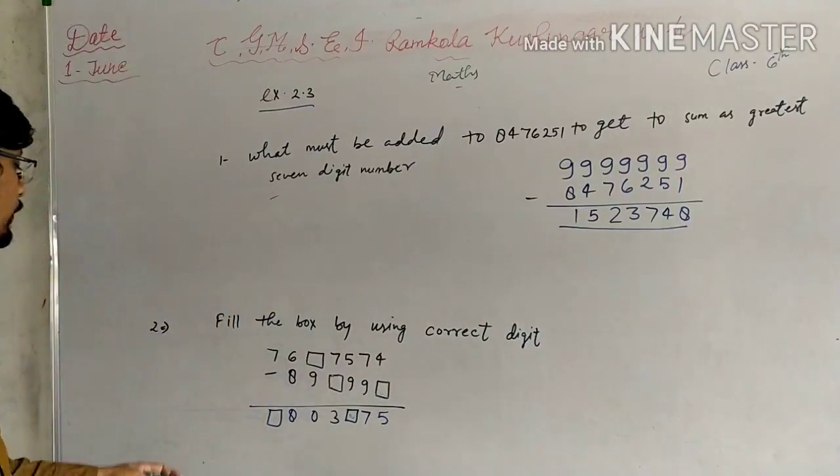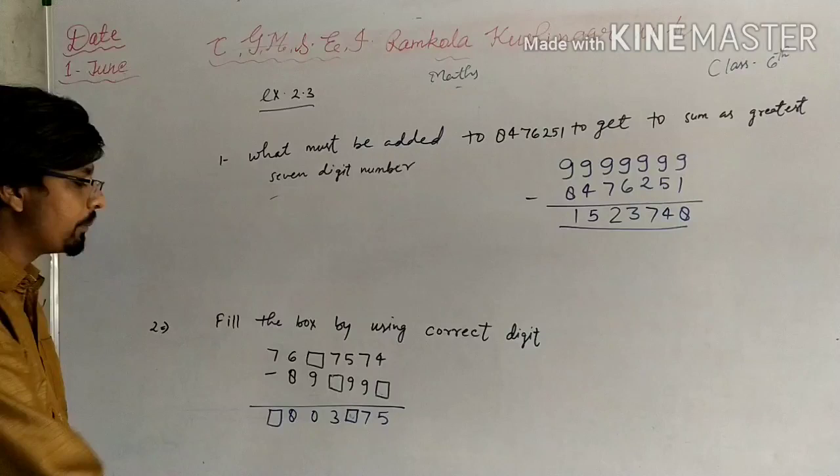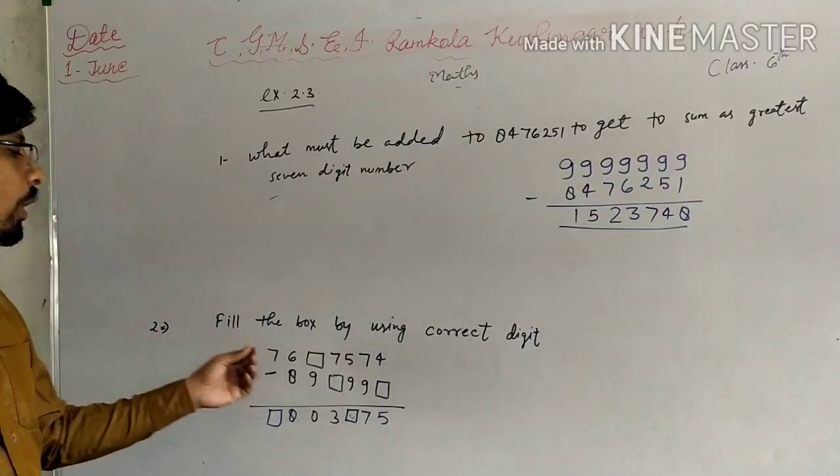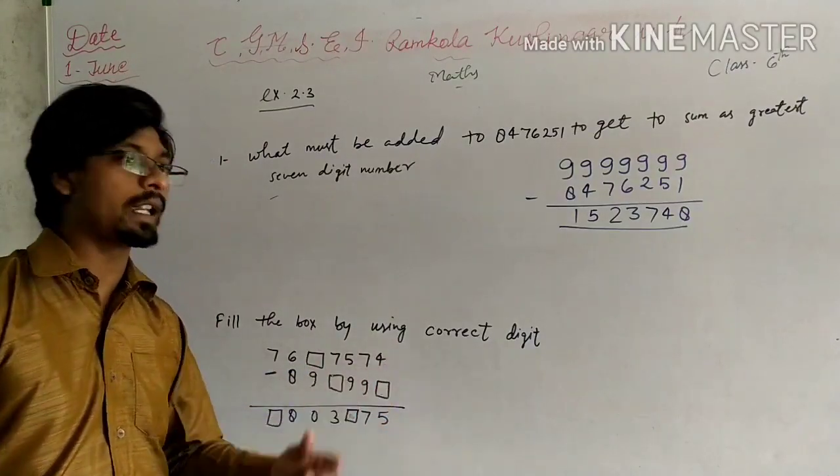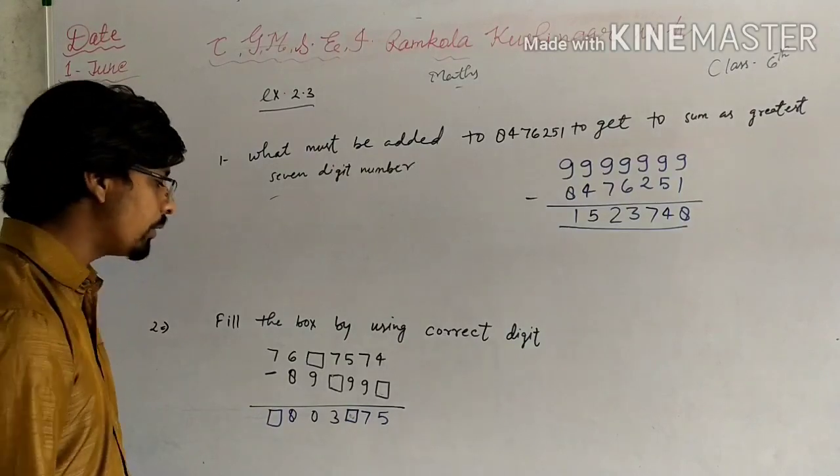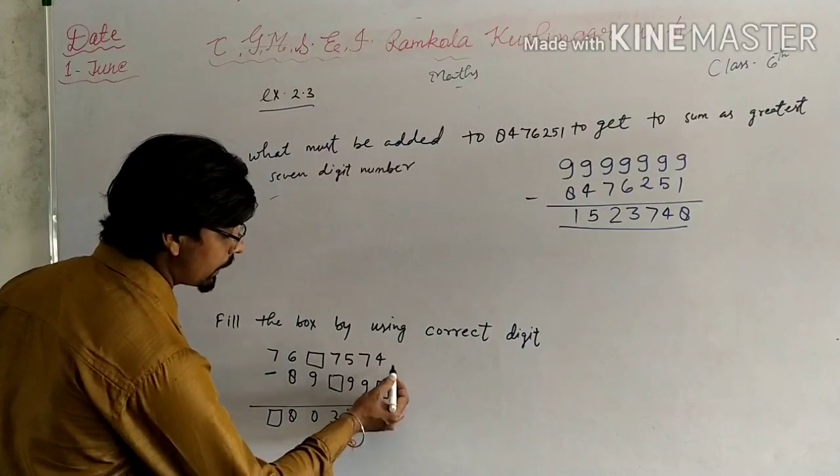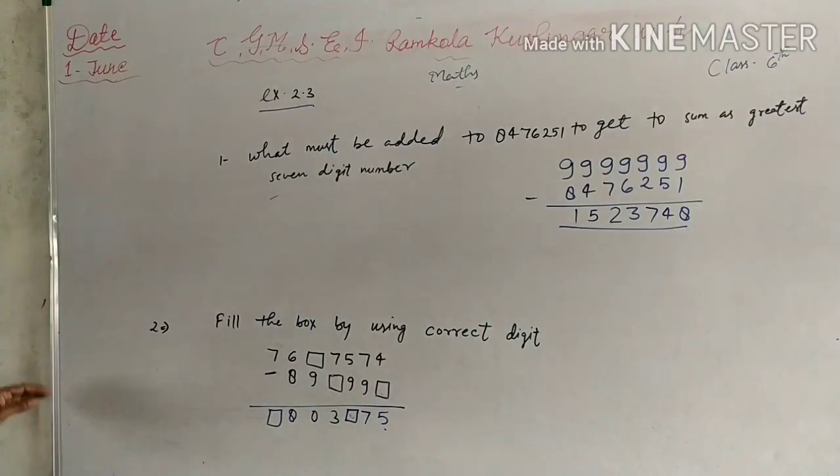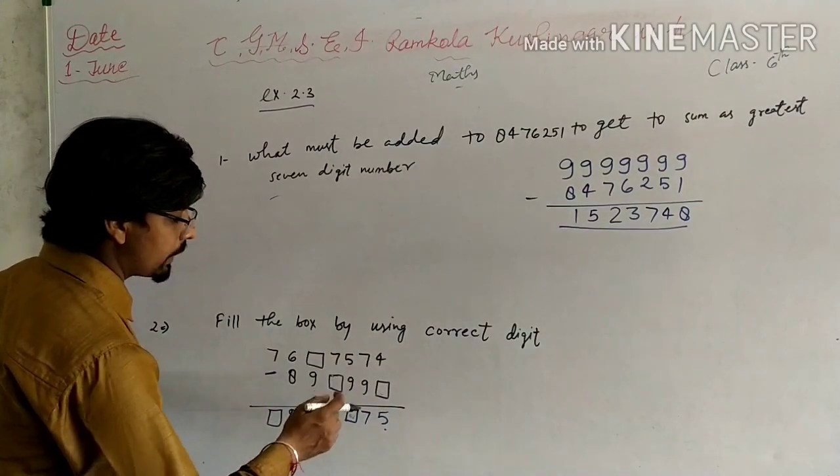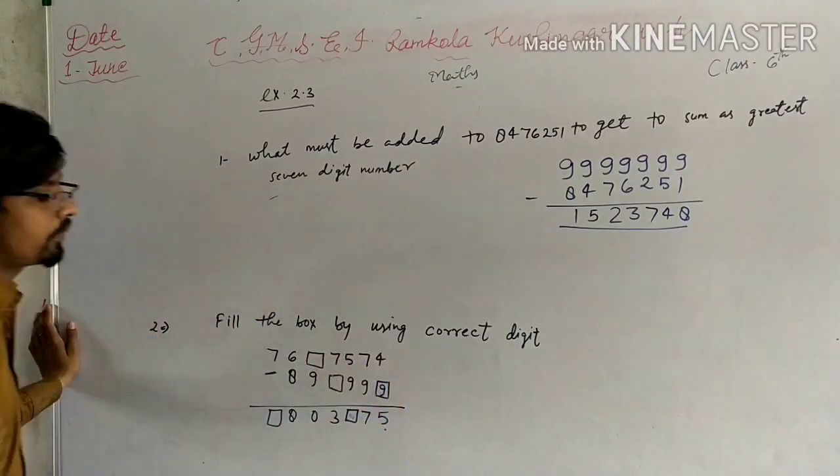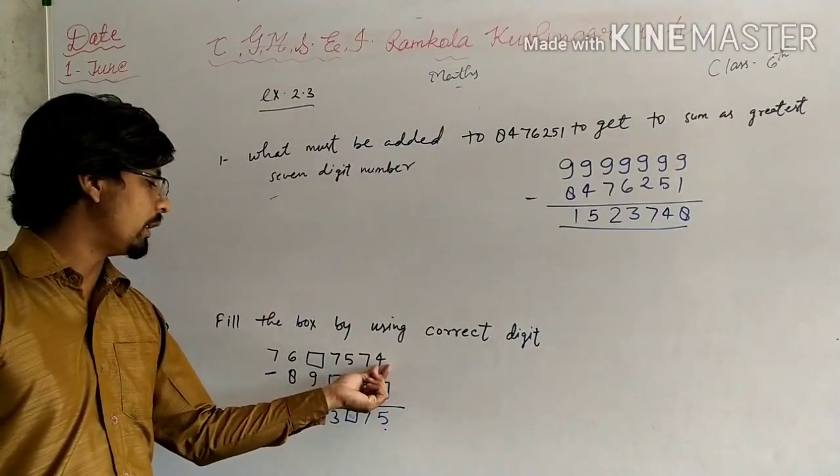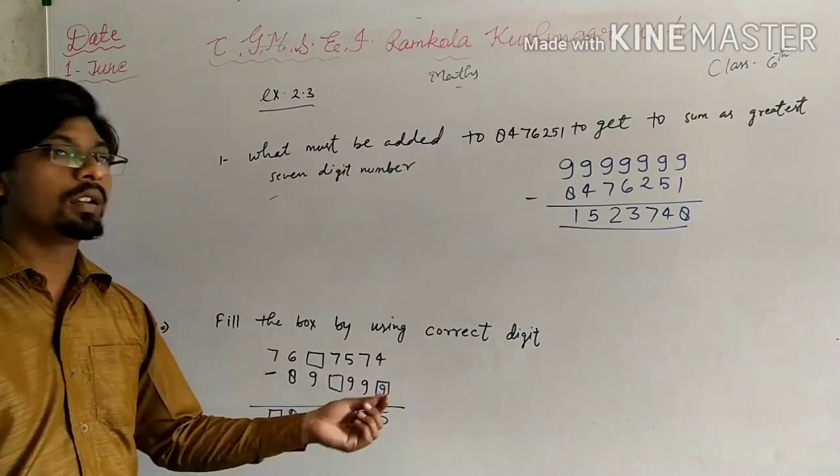The next question is: fill in the boxes by using correct digits. Here you can see some boxes are empty. Here is the sign of subtraction. What number will be subtracted from 4 to get 5? You can see it is the bigger and it is the smaller number, so we should take an idea. We know very well if you subtract 4 minus 9, it is not possible.